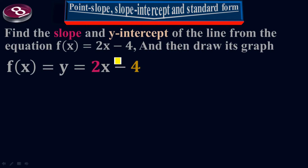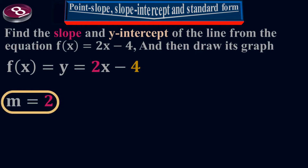This equation is already in slope-intercept form. The slope of the line is 2, so m equals 2. To calculate the y-intercept, I'm going to plug in x equals 0. At x equals 0, I get y equals negative 4. So negative 4 is my y-intercept.